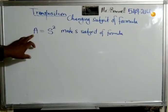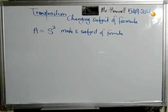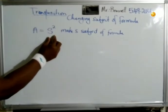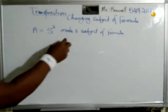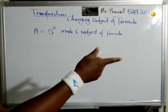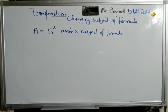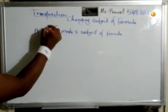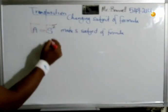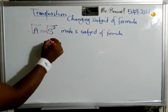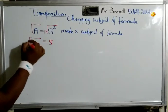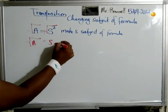So we want to flip it around — we want to make s the subject of the formula. Right now A is the subject, so you find the area. But what if they give you the area and ask you to find the side? In order to find the transpose we need to do the opposite of what's happening. The opposite of square would be square root — makes sense, because two squared is four and square root of four is two. So we take the square root of both sides, which leaves us with s. Therefore s is equal to the square root of A.